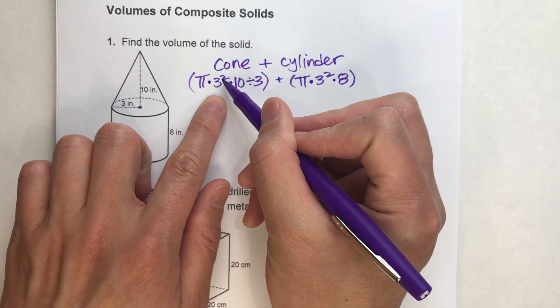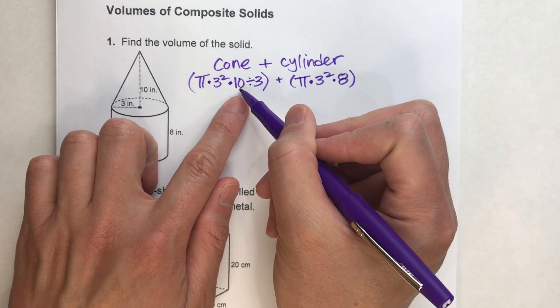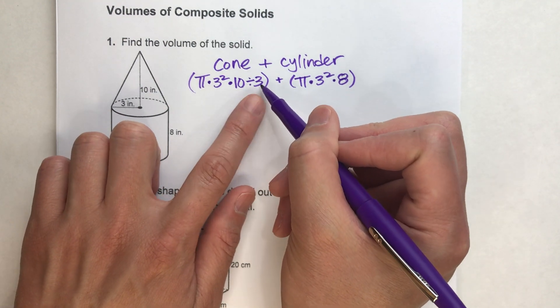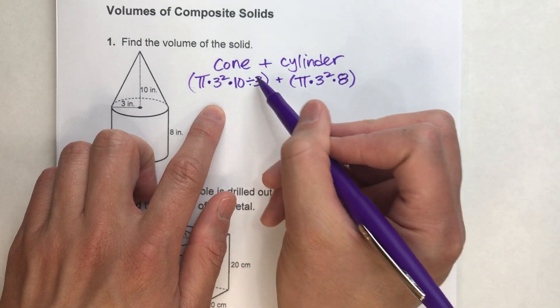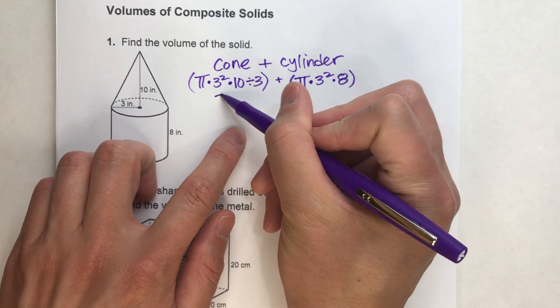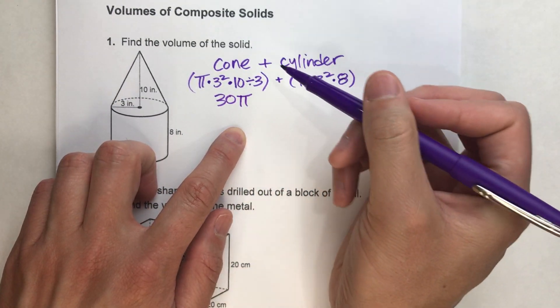So if you notice here, we've got 3 squared, which is 9, times 10, which is 90, divided by 3, which is 30. So this whole thing simplifies to just 30 pi, 30 times pi.